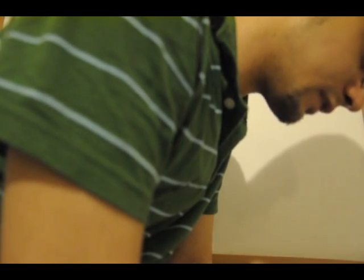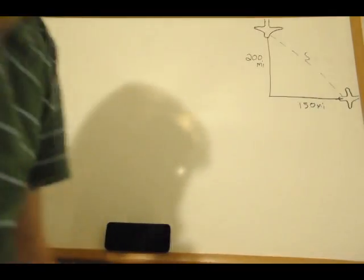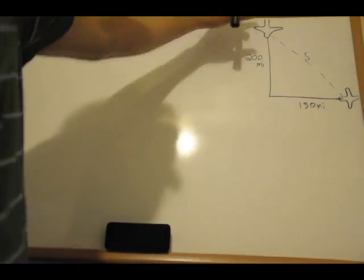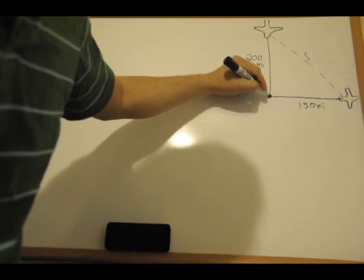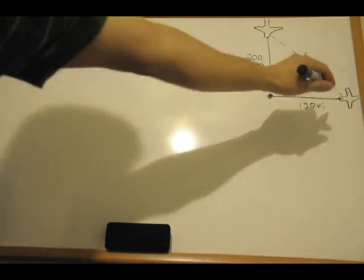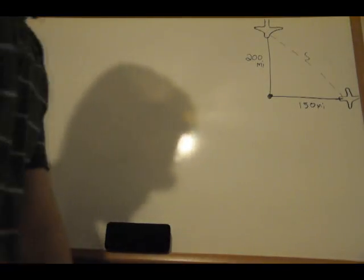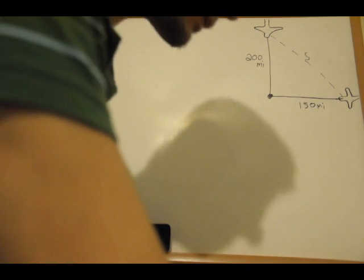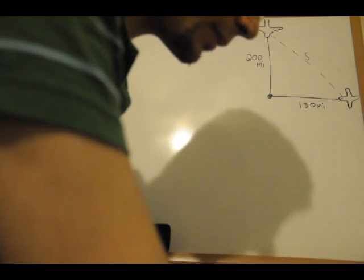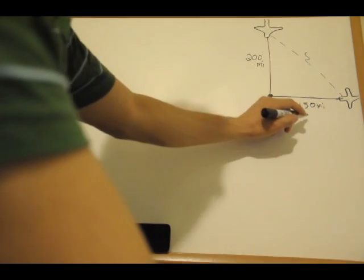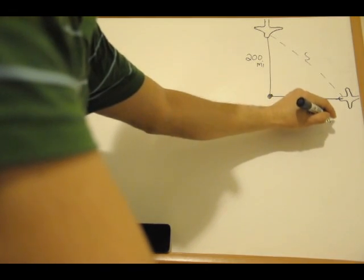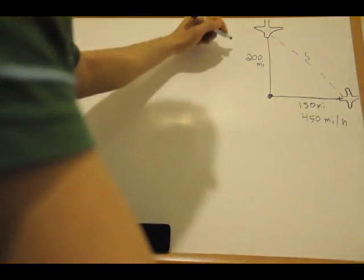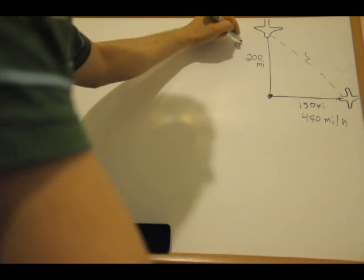So now we have the two planes. This one's at 200 miles from this point, and this one's 150 miles from the point. This one is moving at 450 miles per hour and this one is moving at 600 miles per hour.